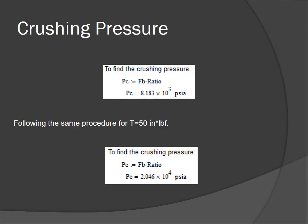Using the ratio found on the last slide, we found that for a 40 pound input force you would get an 8,183 PSI crushing pressure.